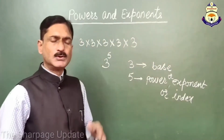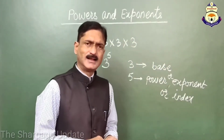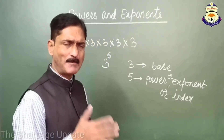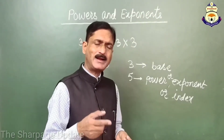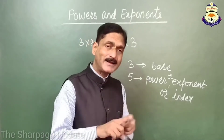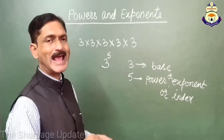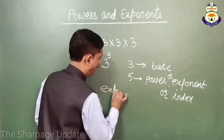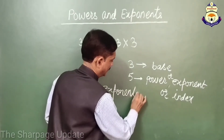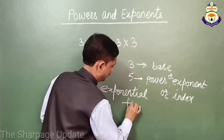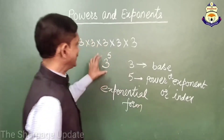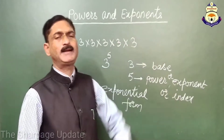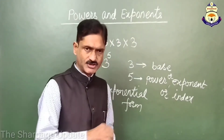So my dear friends, the concise way of writing a number multiplied by itself repeatedly is known as the exponential form, and this is the exponential form of this repeated multiplication.